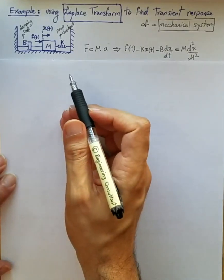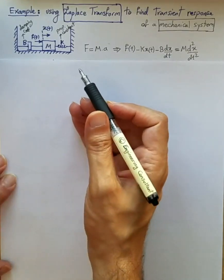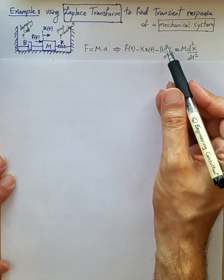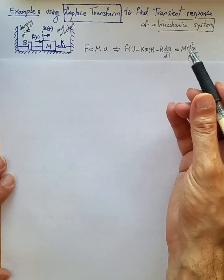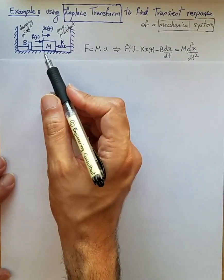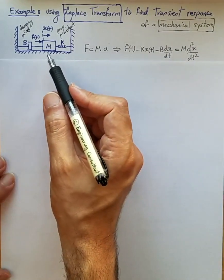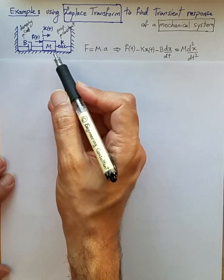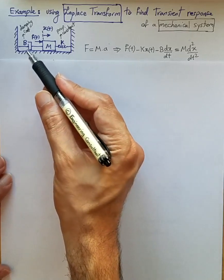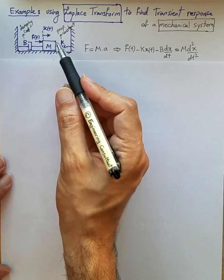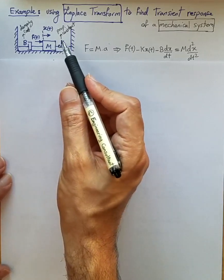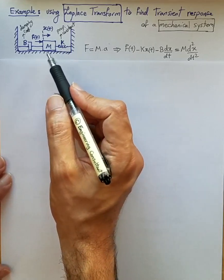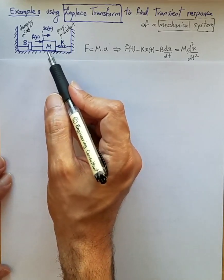This example shows how to use Laplace transform to solve a mechanical system and find a transient response. The mechanical system is a spring-mass system with damping coefficient b, proportionality constant k for the spring, and mass m.